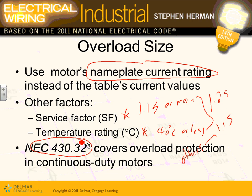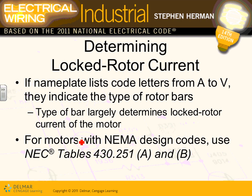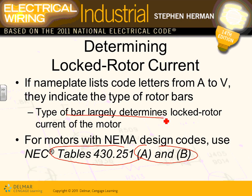Locked rotor currents — there's a table you can use to get locked rotor currents for motor types A and B. There's also a table for NEMA design codes; you can use table 430.251 to get the locked rotor current. The locked rotor current is an indication of the starting torque and starting capability of the motor.